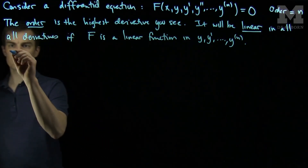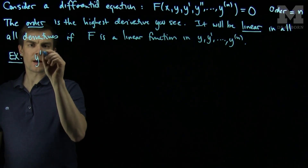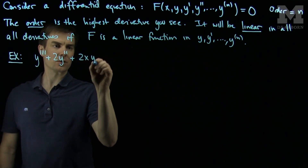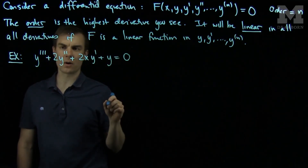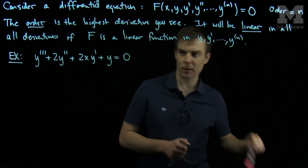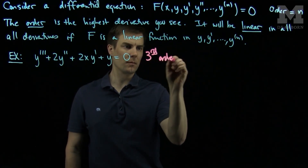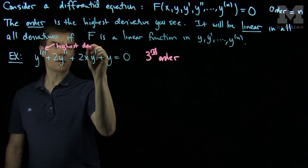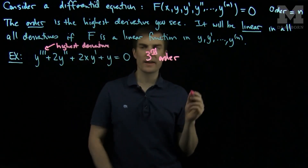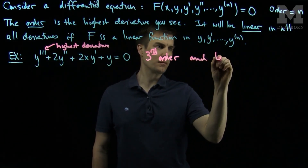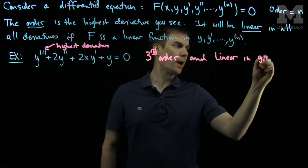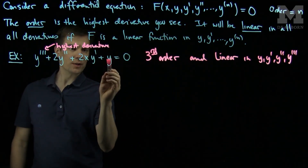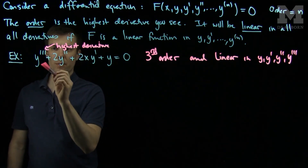Let's look at some examples. y triple prime plus 2y double prime plus 2xy prime plus y equals zero is a third order differential equation. The highest number of derivatives we see is 3. And it will be a linear expression in y, y prime, y double prime, and y triple prime, because all the coefficients of y, y double prime, and y triple prime are just functions of x.